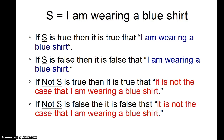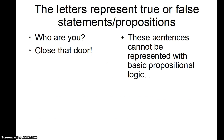Let's look at an example. S represents the proposition that I'm wearing a blue shirt. If S is true, then it's true that I'm wearing a blue shirt. If S is false, then it's false that I'm wearing a blue shirt. If not-S is true, then it's true that it is not the case that I'm wearing a blue shirt. In logic, it's helpful to say 'it's not the case that' rather than just saying 'I'm not wearing a blue shirt.' Also, you want S to represent a positive assertion, and then put not-S if you're negating it. We'll see why later.